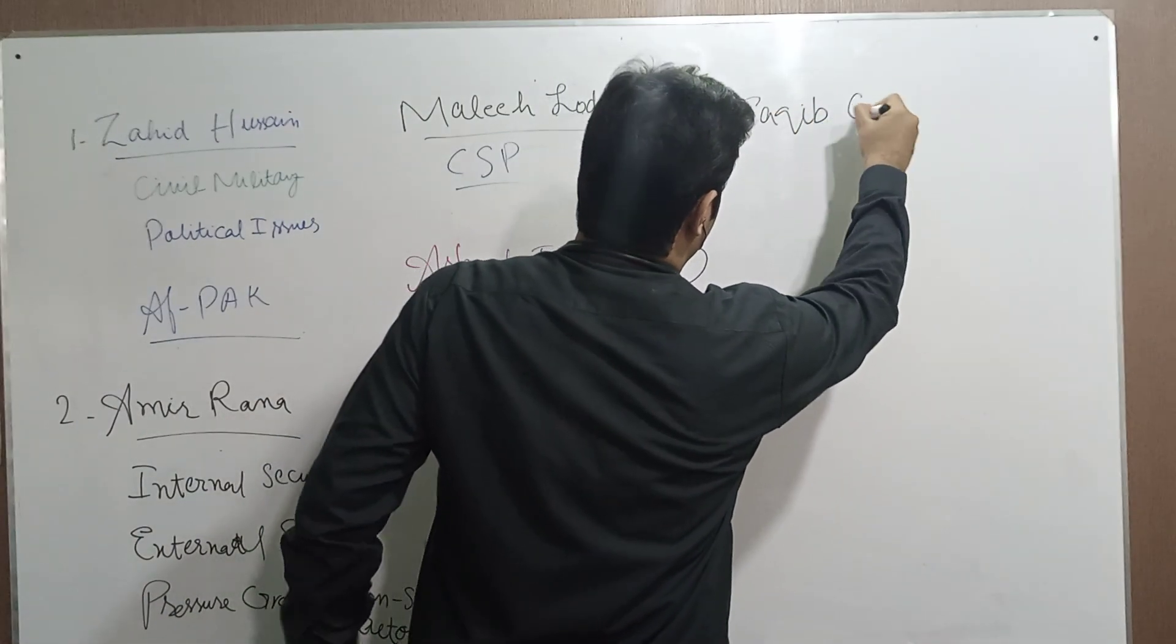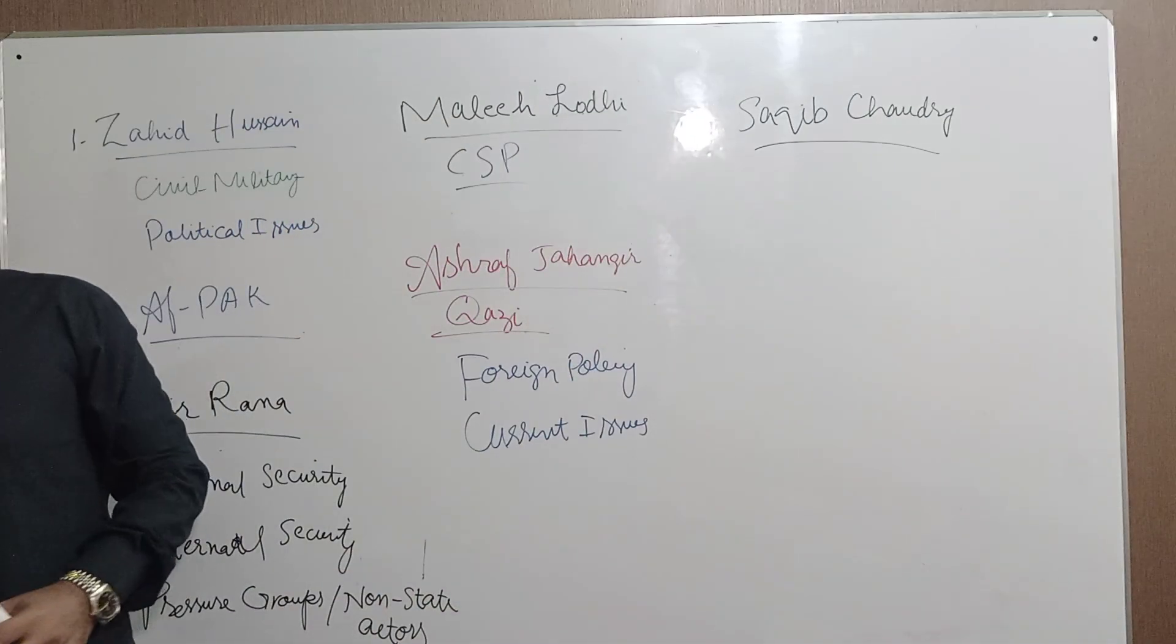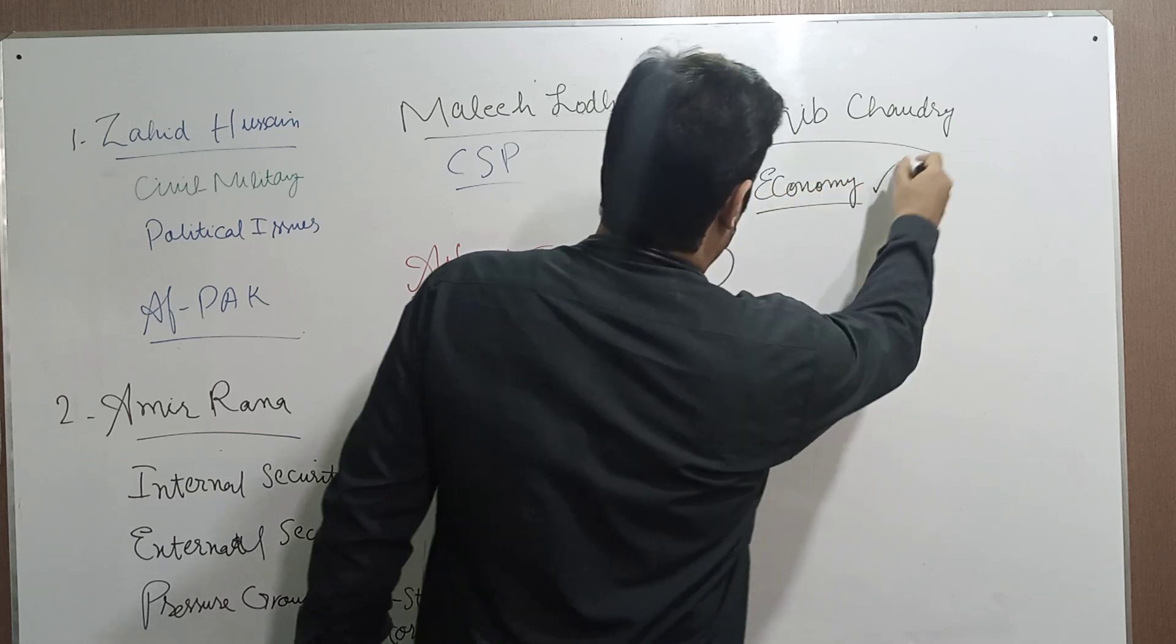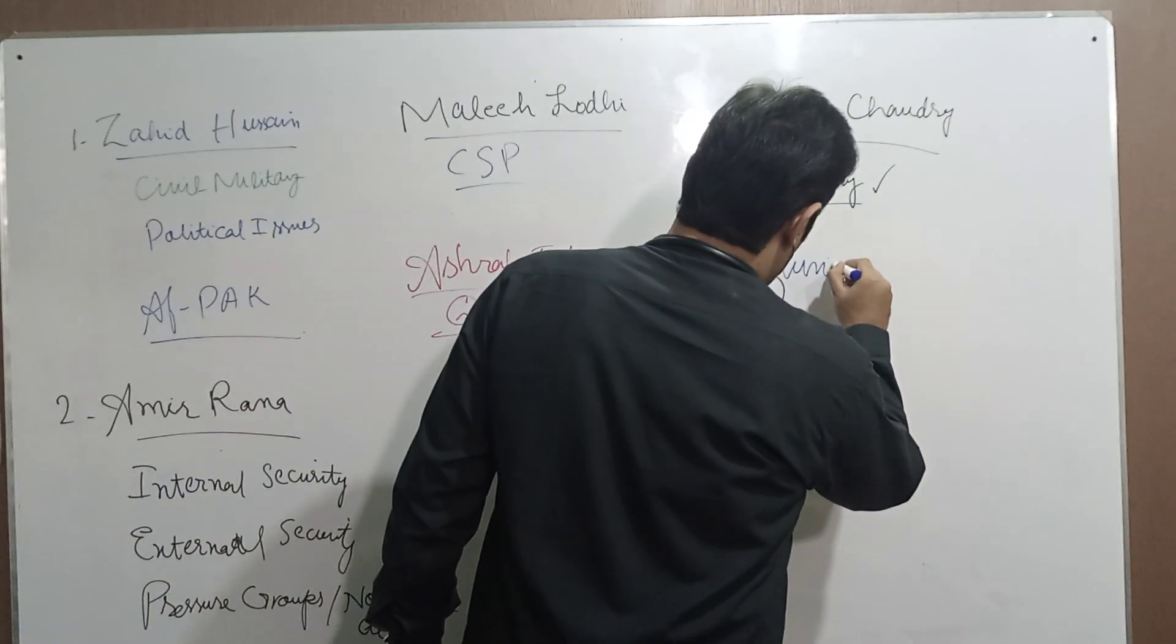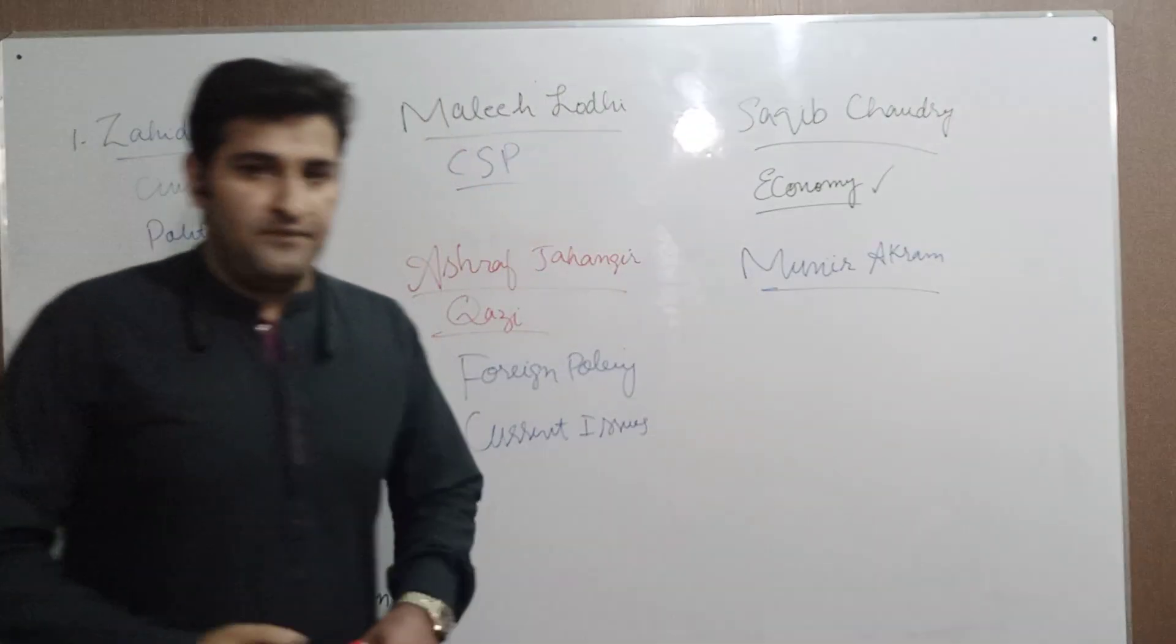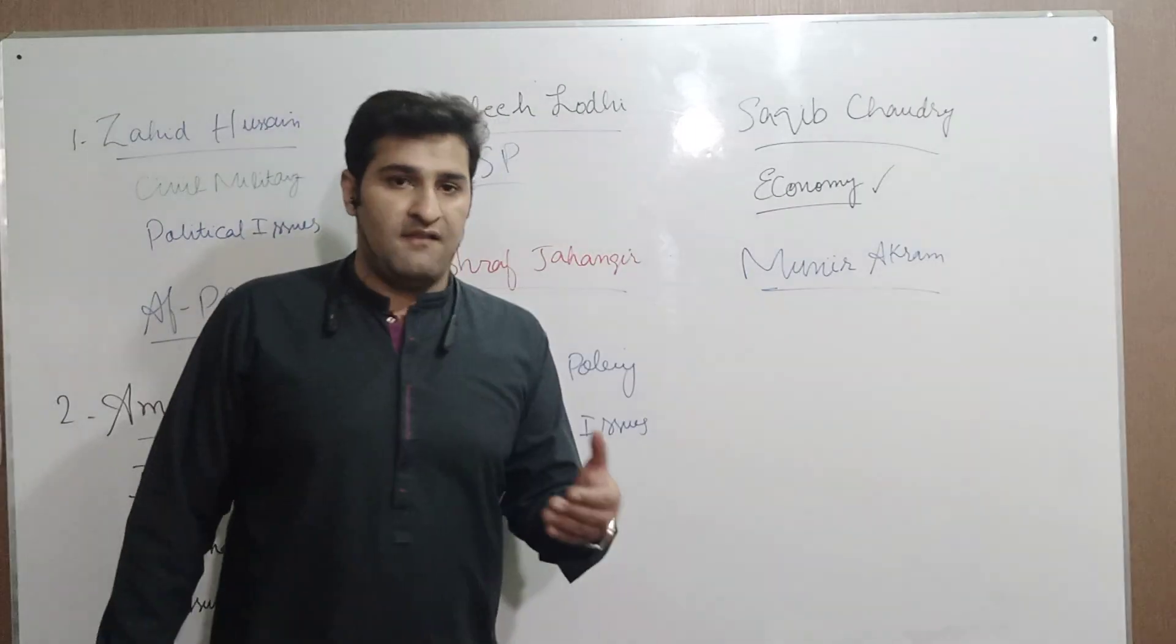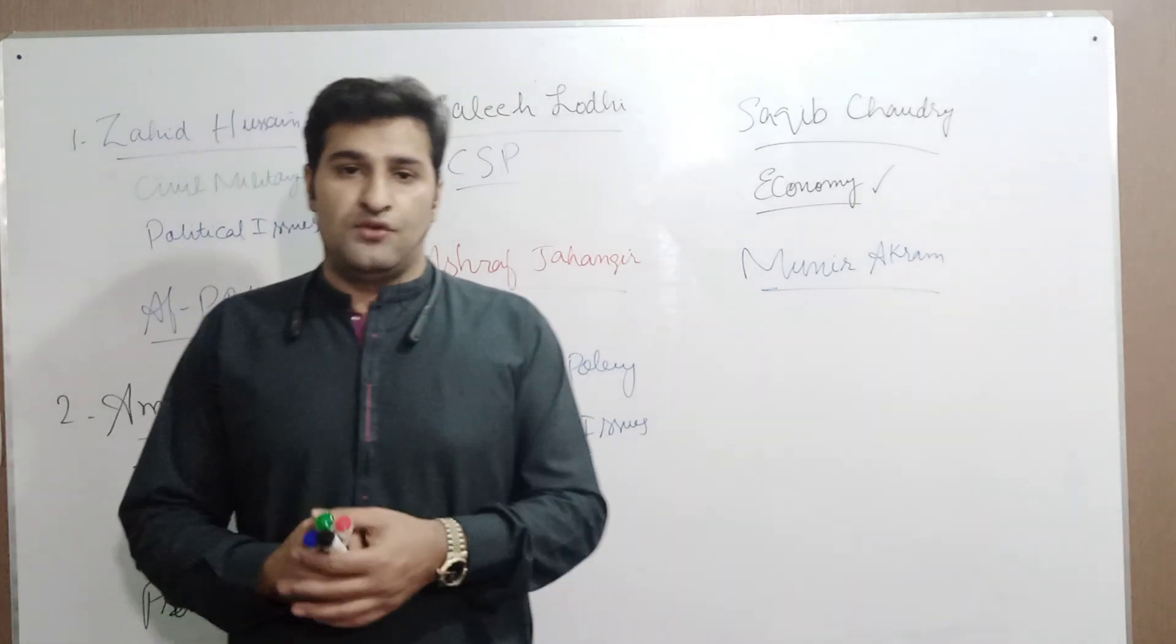Saqib Chaudhary is again a very good writer with literary language, so that is why he has expertise on the economy. He writes very well on economic matters. Last is Munir Akram. He is not writing currently because he has been appointed as Pakistan's representative to the UN, replacing Malihah Lodhi. But his articles that have been written in the last year or previous years are very good because international scenarios don't change so quickly, so one-year-old articles are still relevant.